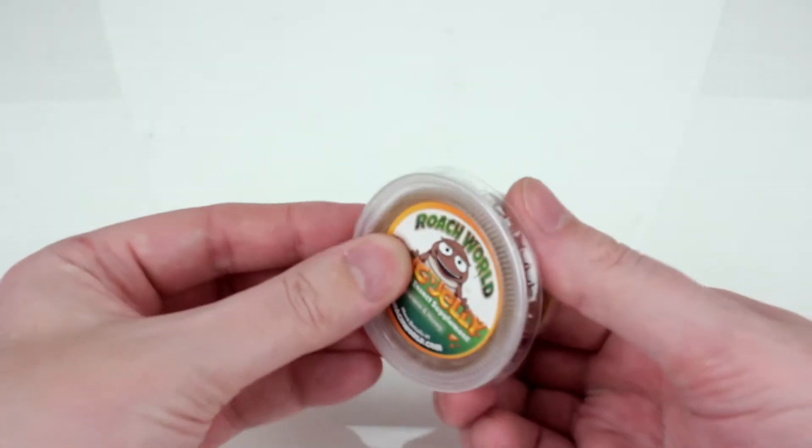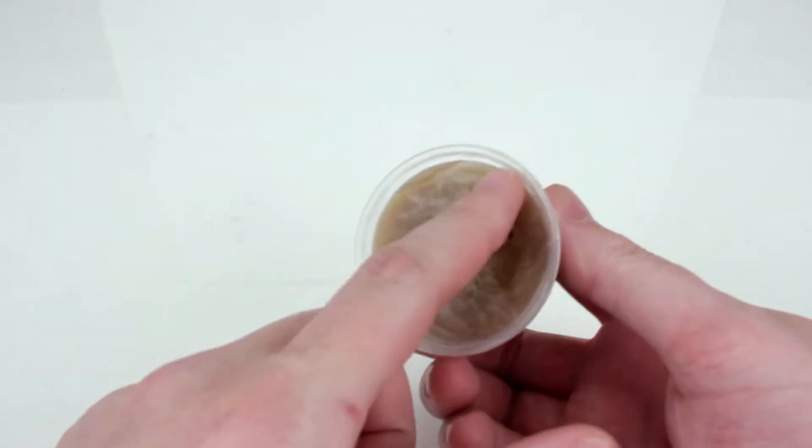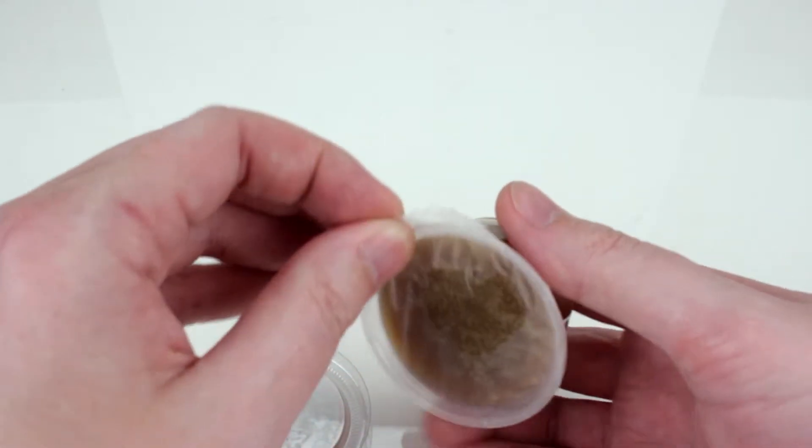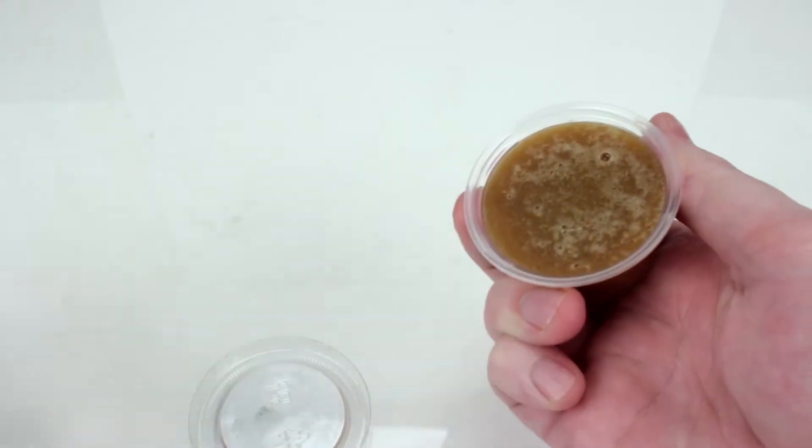Roach World Bug Jelly is our innovative fresh fruit and vegetable supplement for frugivore insects like roaches, crickets, millipedes, flightless fruit flies, and even some fruit eating lizards like crested geckos.